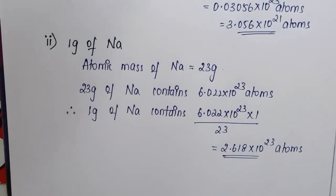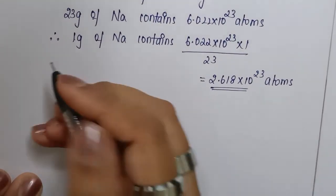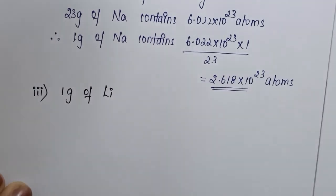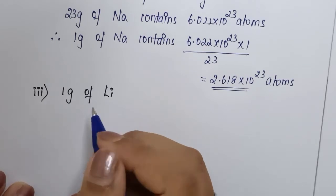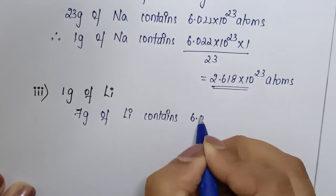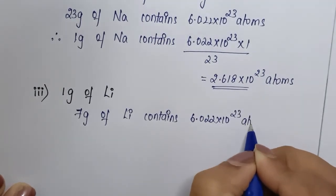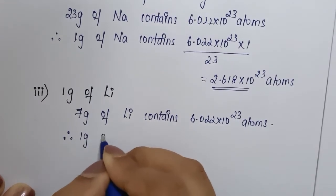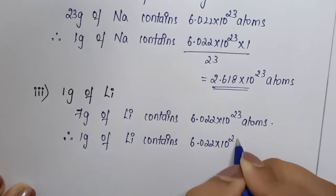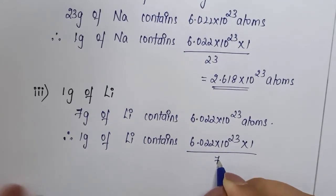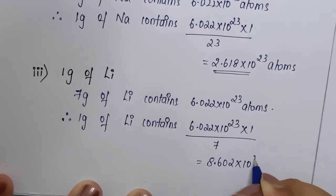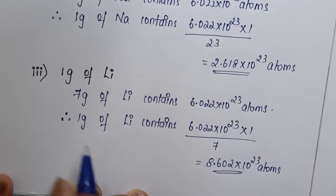The third question is 1 gram of lithium. The atomic mass of lithium is 7. So 7 grams of lithium contains 6.022×10²³ atoms. Therefore, 1 gram of lithium contains 6.022×10²³ × 1/7. When we solve this, we get 8.602×10²³ atoms. That is the answer for 1 gram of lithium.